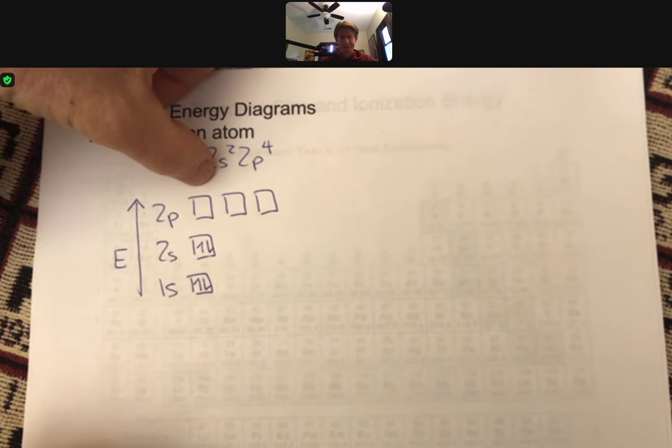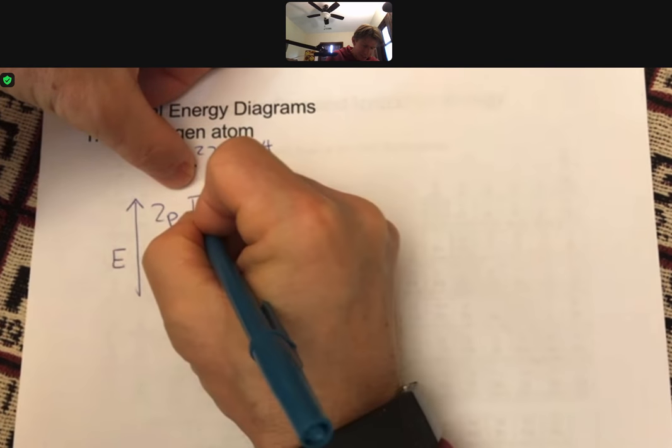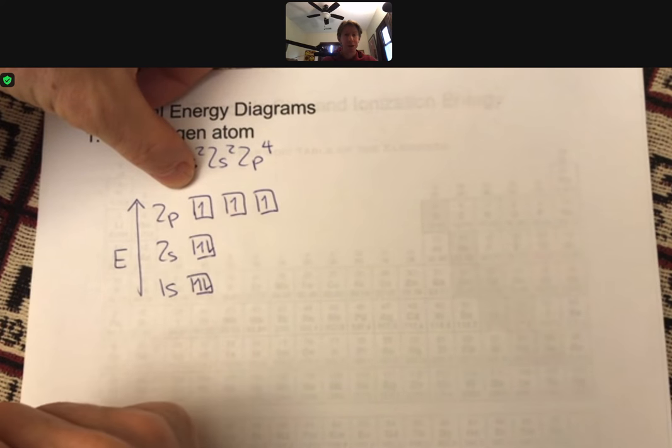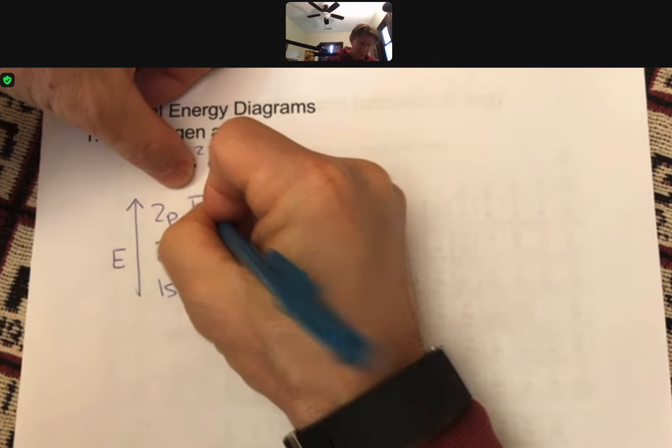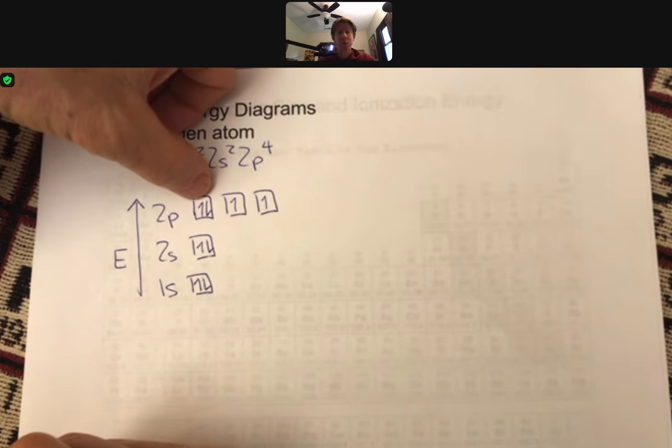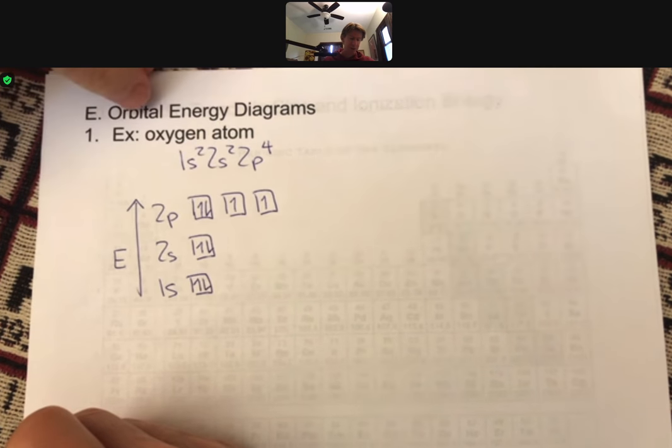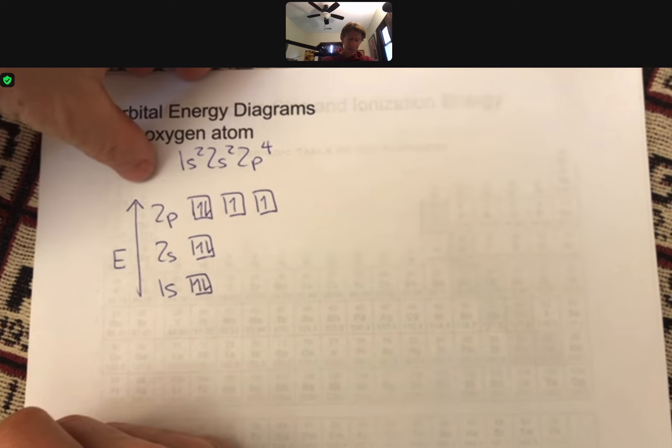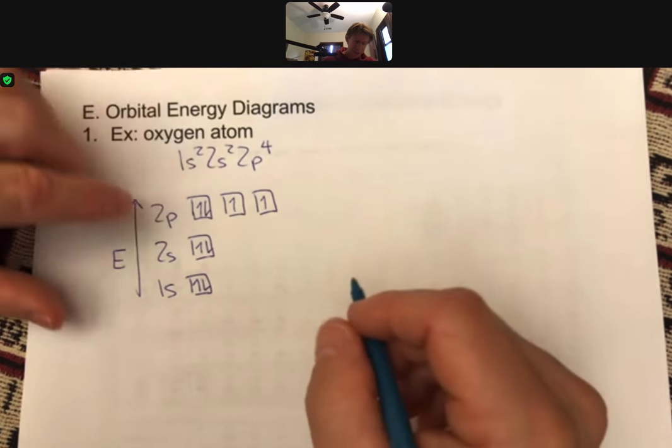Three of these, and we put the electrons in one at a time, one, two, three. We don't pair them unless we absolutely have to. There's that fourth electron. This is the correct electron configuration, or sorry, correct orbital energy diagram for the oxygen atom.